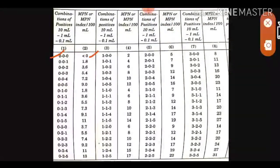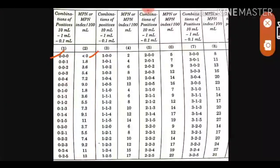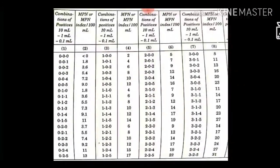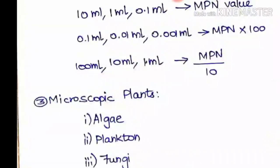If you see here, if you get zero value in all three tubes - zero, zero, zero - your MPN value will be less than zero. For example, if you have two positives in 10 ml, one positive in 1 ml, and three positives in 0.1 ml, check this value. The MPN value related to that is 14. Relate the combinations of positives from the test tube to the MPN index value.